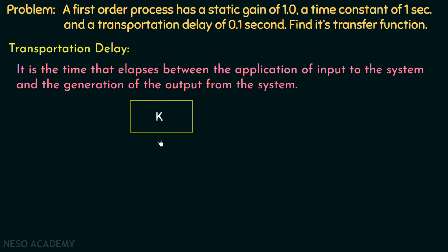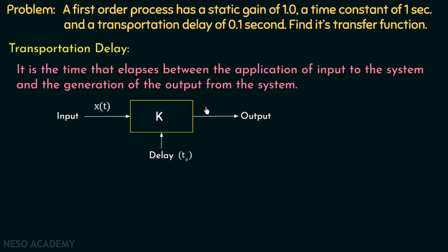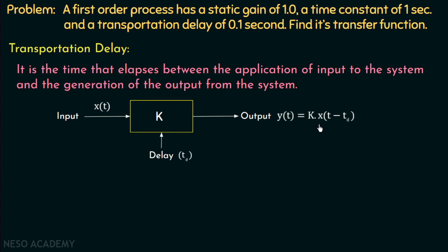Suppose we have a system with gain k, and we provide input x(t). Now consider that this system has a delay td. Then the system will take td amount of time to generate the output. That is, if input x(t) is given at t = 0, then we will have the output at t = td seconds.